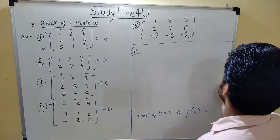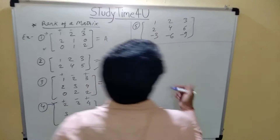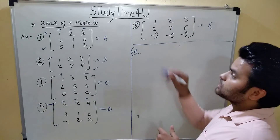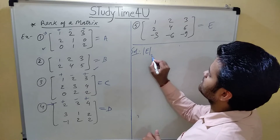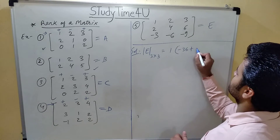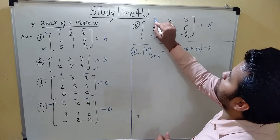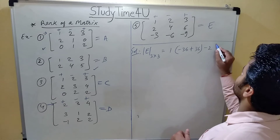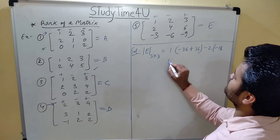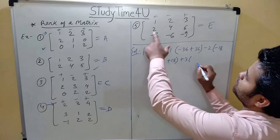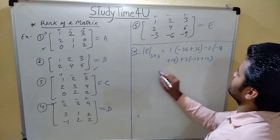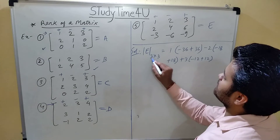The last example in this video: we call it E, a square matrix. We consider the 3×3 determinant. Solving: 1 times (4 into 9 minus 36) minus 2 times (2 into 9 minus 18) plus 3 times (6 minus 18 plus 12). Simplifying: 0 plus minus 2 times (minus 18 plus 18) plus 3 times (plus 12 minus 12) = 0. So the rank is not 3.